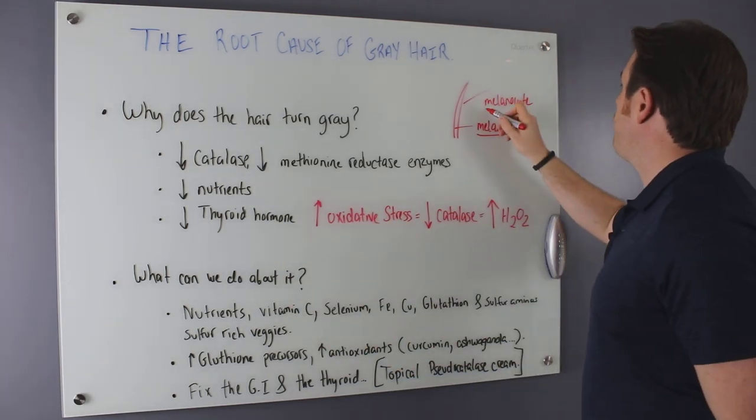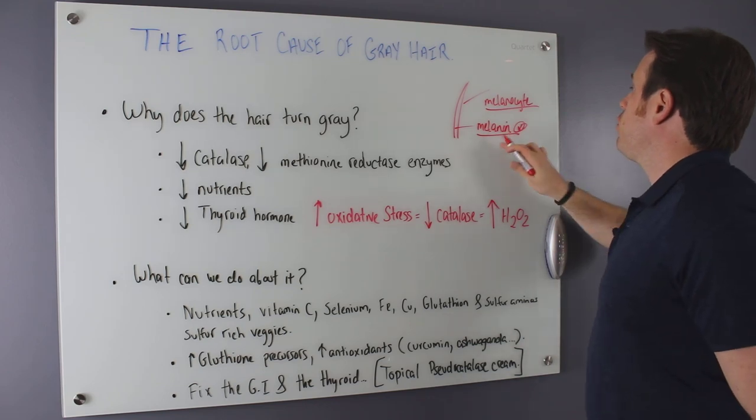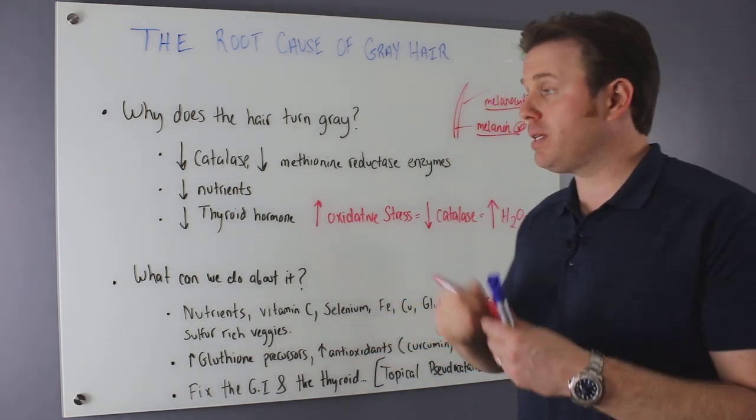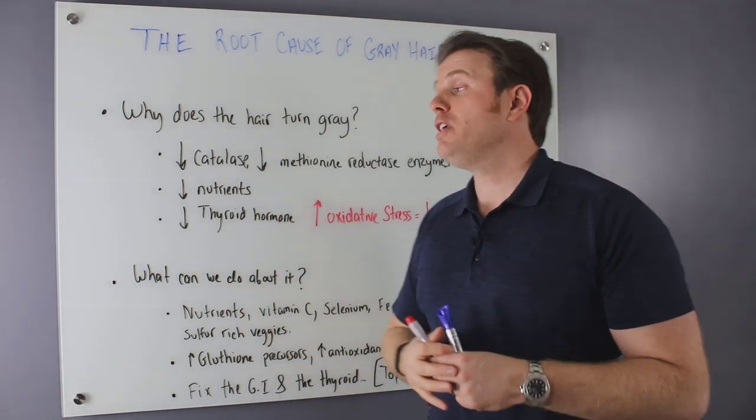When we look at balding, balding focuses on the melanocyte. Graying focuses on the melanin. So just keep that in the back of your head. And there are similar mechanisms here, similar nutrients, similar mechanisms.